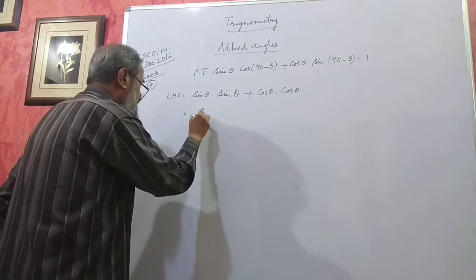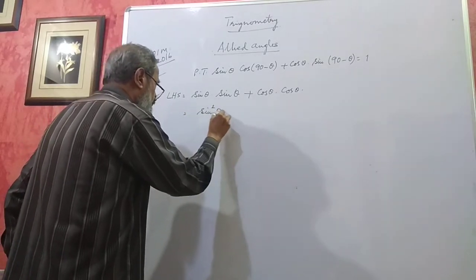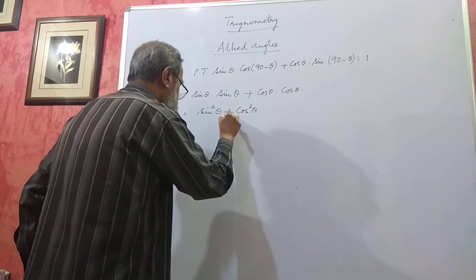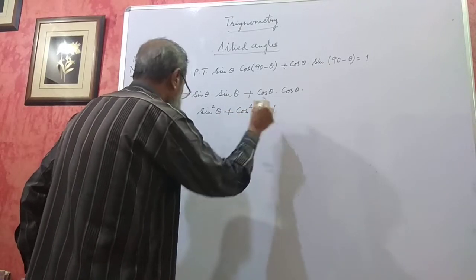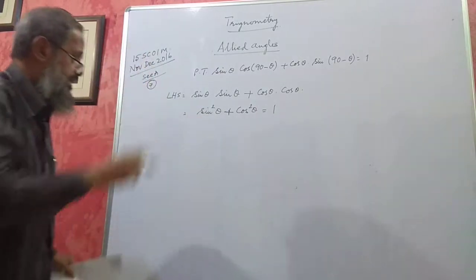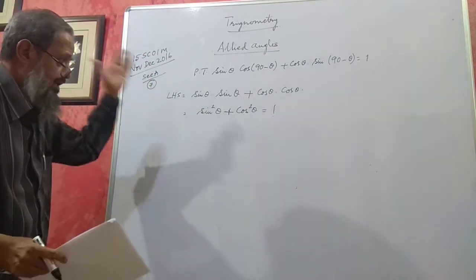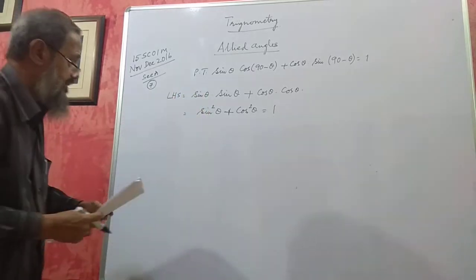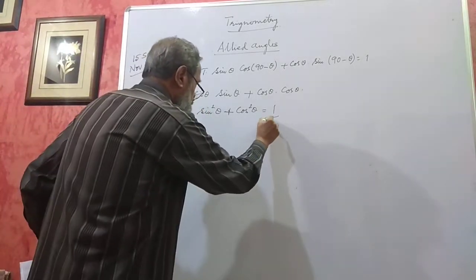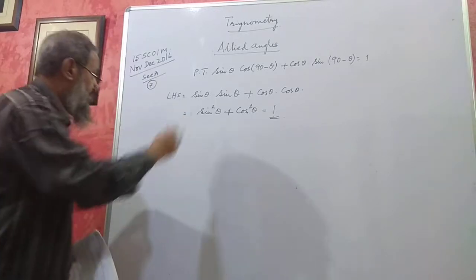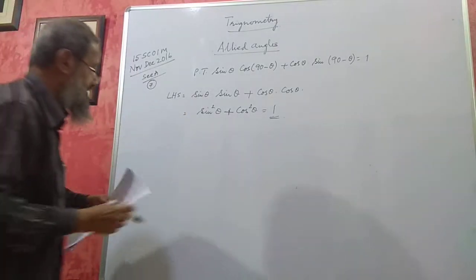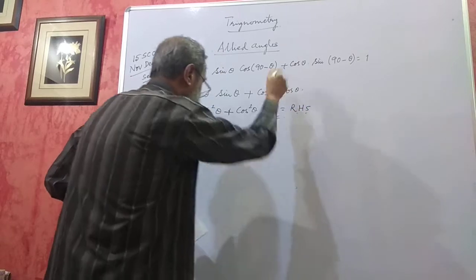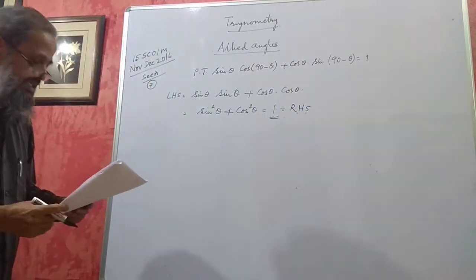This will be sin²θ and this will be cos²θ. Sin²θ + cos²θ is always 1 — we have shown this in an earlier video in identities. So, this is proved. We have started with the left hand side and reached the right hand side.